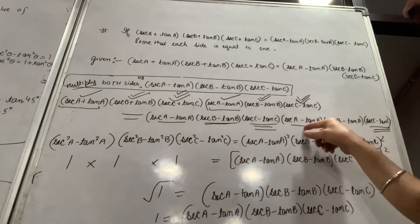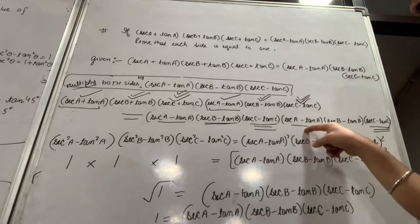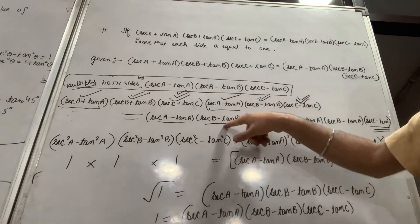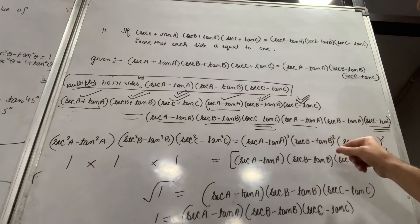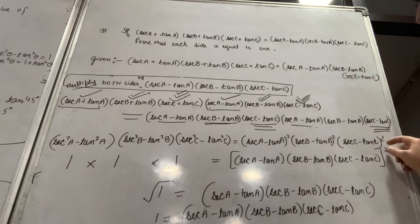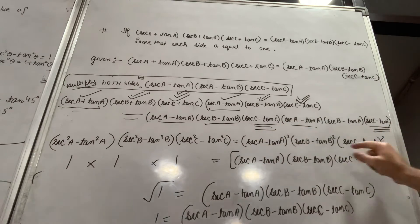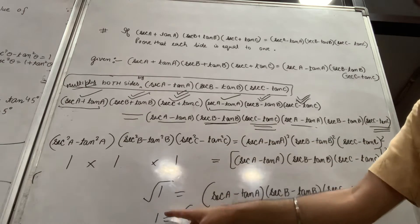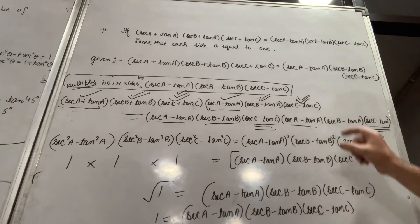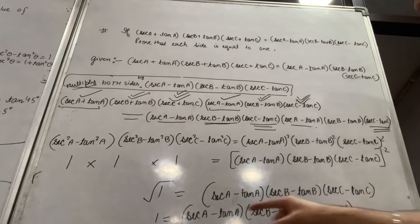We see that matching terms appear on both sides. This results in (sec A - tan A)², (sec B - tan B)², and (sec C - tan C)² on one side. Taking the square root of both sides, the square root cancels the square, giving us (sec A - tan A)(sec B - tan B)(sec C - tan C) = 1.